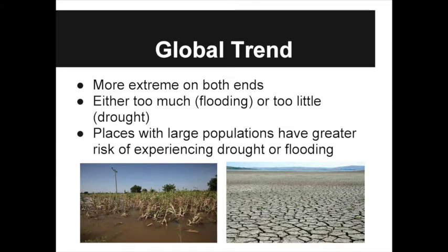Looking at data, one can see that in areas where there is lots of rain, there will be even more rain, possibly causing floods, drowning of crops and soil erosion. However, where there is already little rain, such as some parts of the USA where farmers are struggling to grow crops, it looks like there will be even less rain, causing droughts, crops dying and land becoming unfarmable.